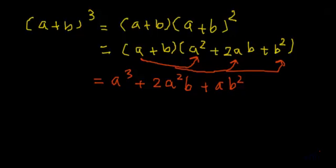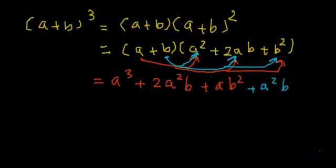Now 'a' has been multiplied to all the terms of the second bracket. Next, we take the second term 'b' of the first bracket and multiply it to all the terms. When b is multiplied by a squared we get plus a squared b, and when b is multiplied by 2ab we get plus 2ab squared.